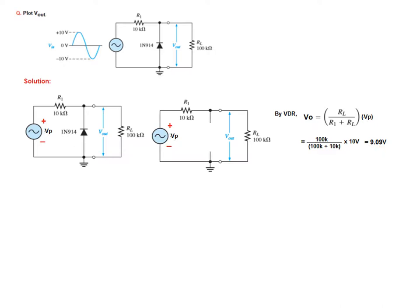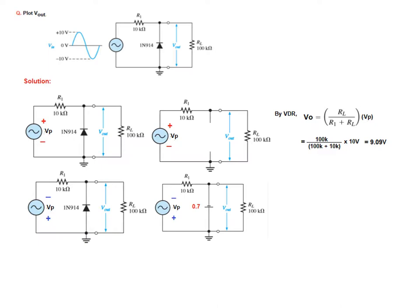This was for the positive half cycle. Let us see for the negative half cycle. Negative is touching this diode, so this makes the diode forward biased. We will replace this diode by a 0.7V battery.